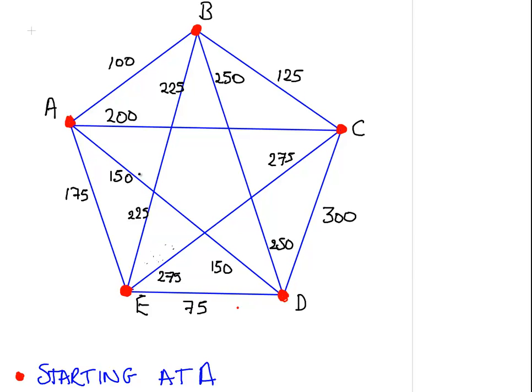In this first example we are going to start from A, so this is our starting point. We need to determine which of our neighbors is the nearest, and in this case all four of the other vertices are neighbors. B is 100 away, C is 200 away, D is 150 away and E is 175 away. So it is pretty clear that we are going to B now. That is our first stop.